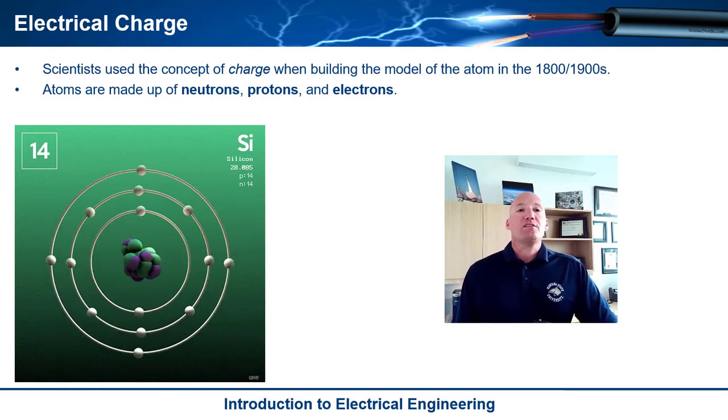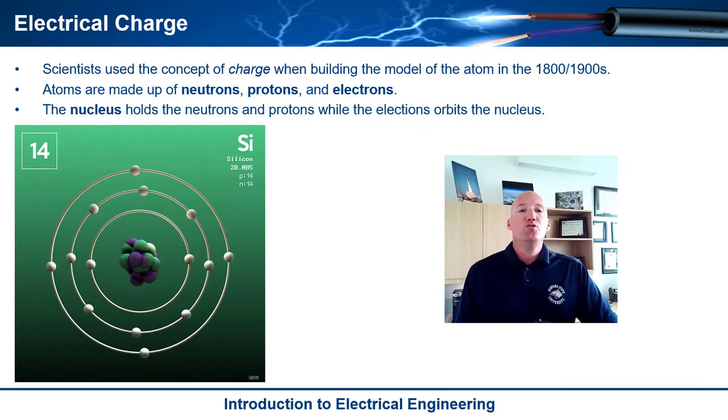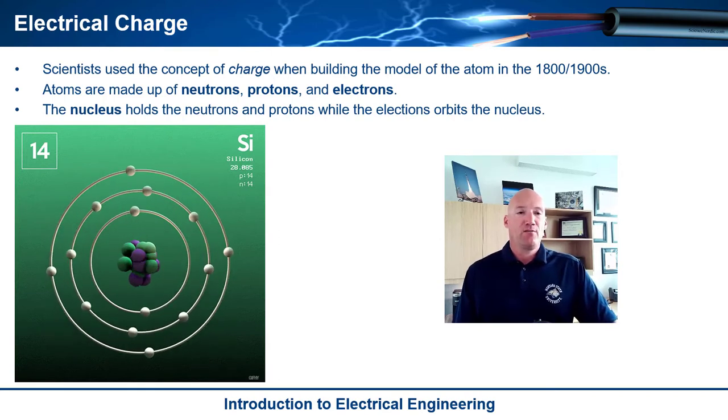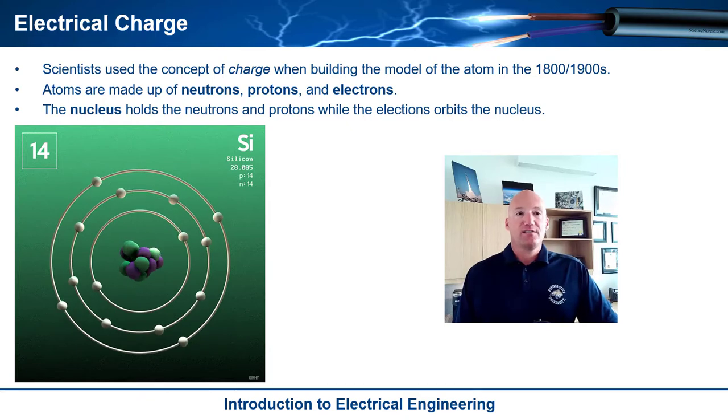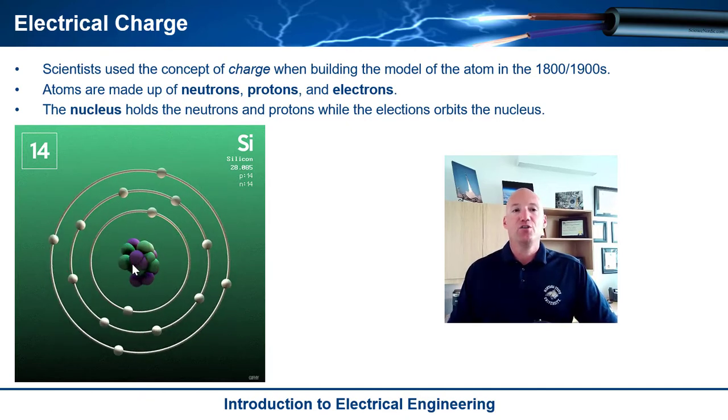And it's essentially an atom is made up of three particles. So the neutrons, protons, and electrons. And the way that it works is that there's a nucleus that holds the neutrons and protons, and then the electrons orbit the nucleus. So all the things that you see rotating around the outside are the electrons. And then the little glob in the middle here, that's the nucleus.